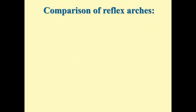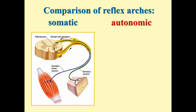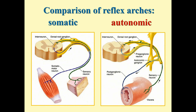Comparing somatic and autonomic reflex arcs: the sensory neuron is similar in both — located in spinal ganglia with one branch from the receptor and a central branch into the spinal cord. The main difference is that somatic receptors are mostly skin receptors while autonomic reflexes have receptors in internal organs. Interneurons in both systems are located inside gray matter.